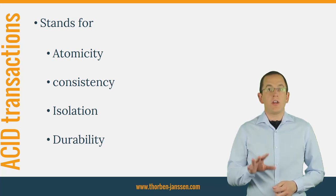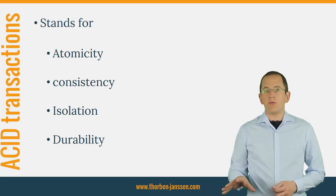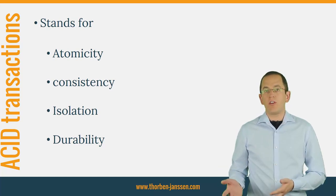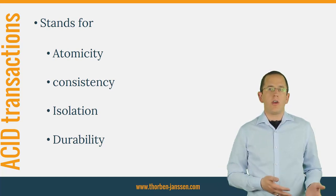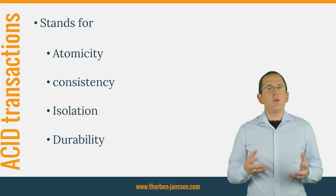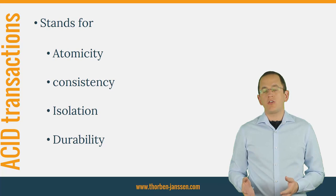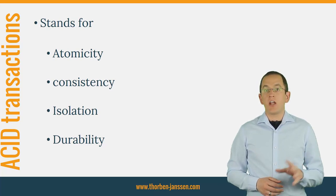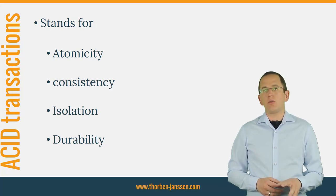Atomicity describes an all-or-nothing principle. Either all operations performed within the transaction get executed, or none of them. That means if you commit the transaction successfully, you can be sure that all operations got performed. It also enables you to abort a transaction and roll back all operations if an error occurs.